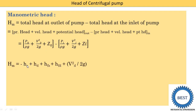The second method: manometric head equals negative HS (suction head is negative, i.e., vacuum) plus delivery head HD, plus friction head loss in the suction pipe, plus friction head loss in the delivery pipe, plus the velocity head loss in the delivery pipe VD squared by 2g. Using this equation, we can also find the manometric head.